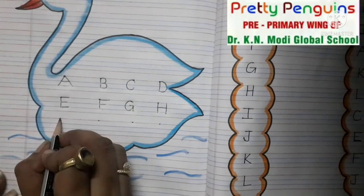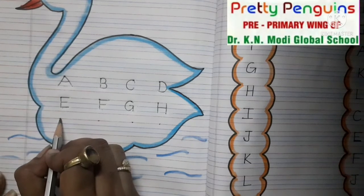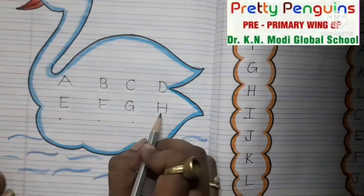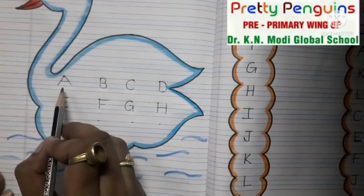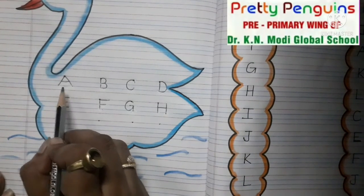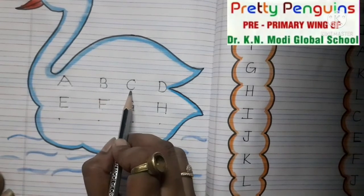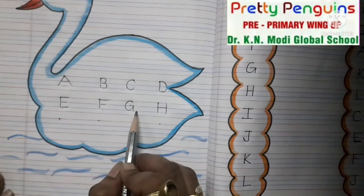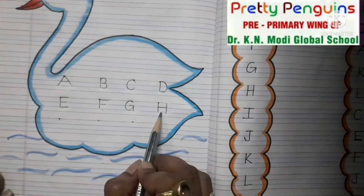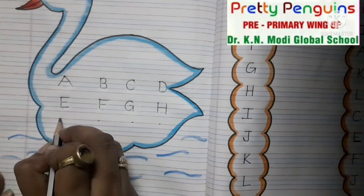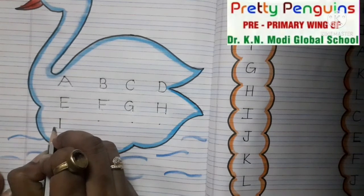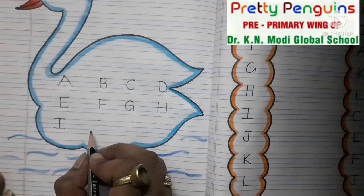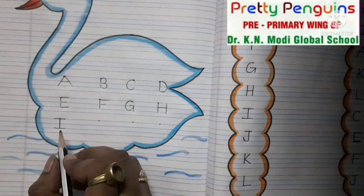Now come to the next line. Tell me which is the next letter after H. H ke baad kya aega? Read again — A, B, C, D, E, F, G, H — after H comes I. This is letter I. I is for ice cream.